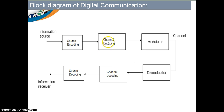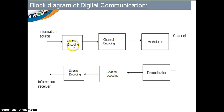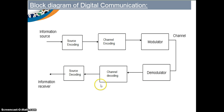So the system again consists of only three parts: a transmitter, a channel, and a receiver. The transmitter consists of the information source, source encoding, channel encoding, and modulation. The signal then passes through the channel where noise is added, and then goes to the receiver, which consists of the demodulator, channel decoding, source decoding, and finally the information at the destination.